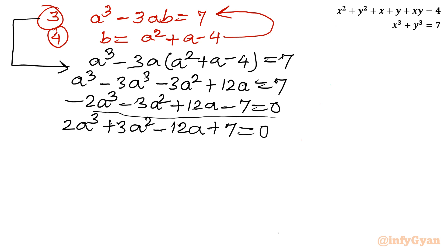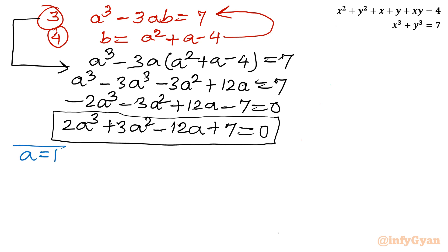This is a cubic equation. If we add all the coefficients: 2 + 3 − 12 + 7 = 0, so a = 1 is a straightforward solution. You can verify: 2 + 3 − 12 + 7 = 0. So a = 1 is our base solution.